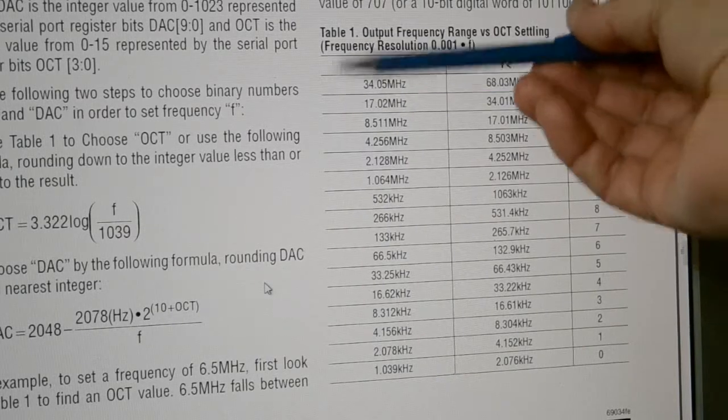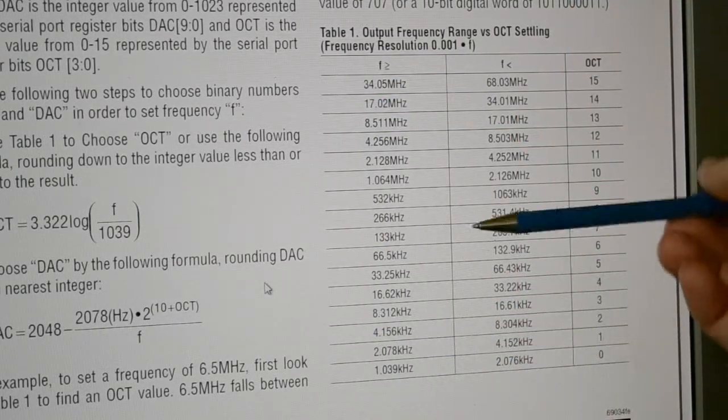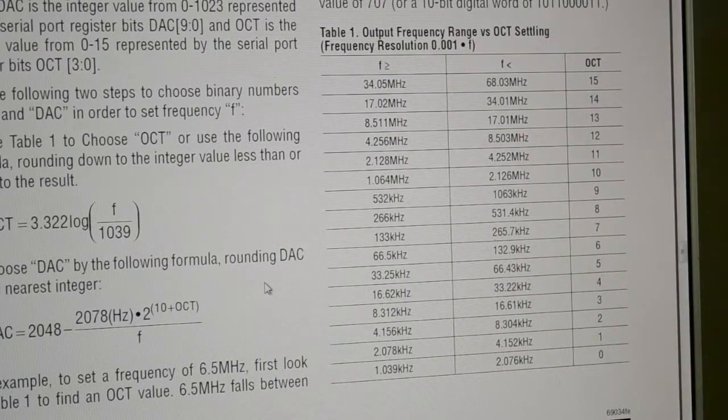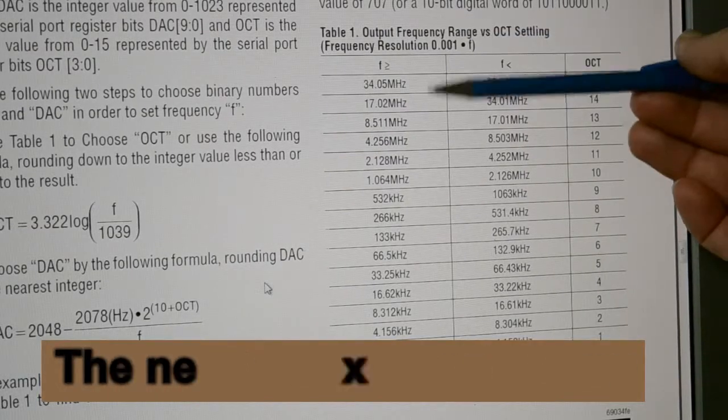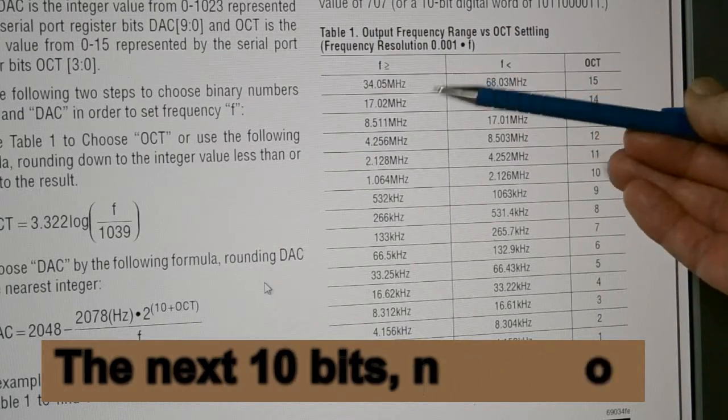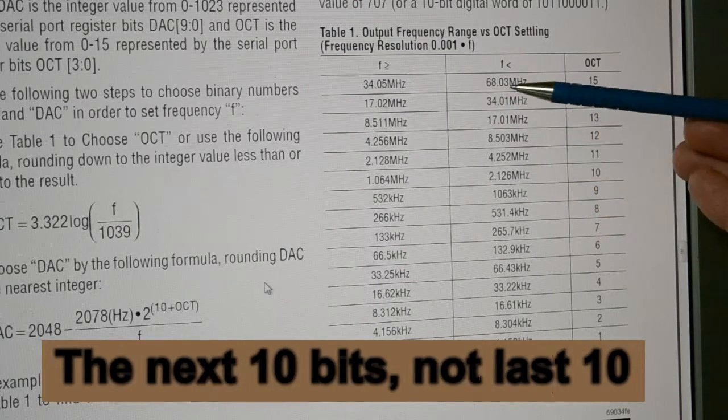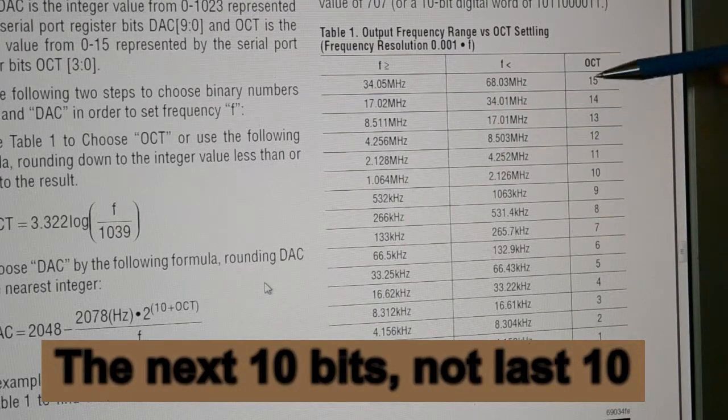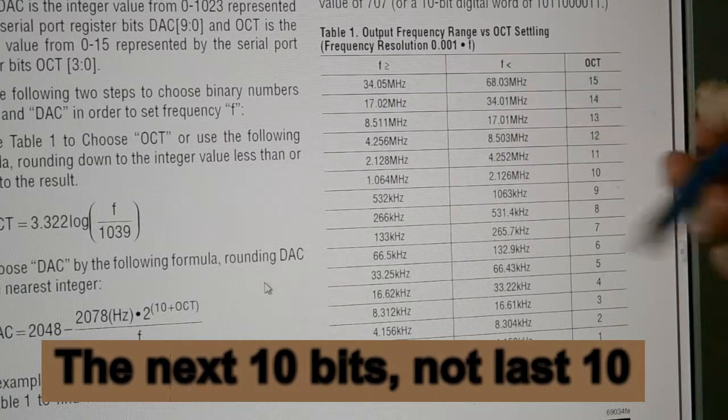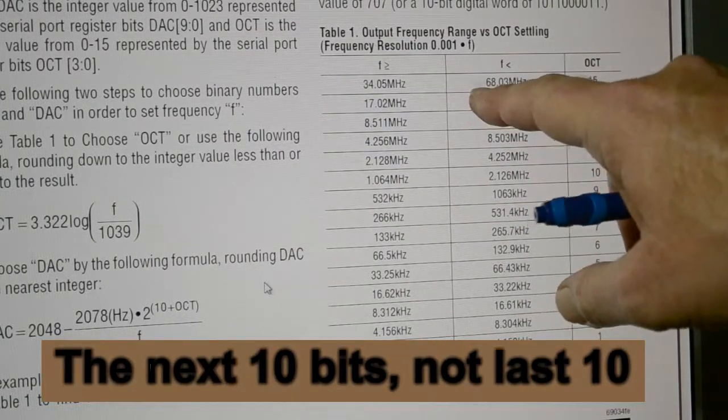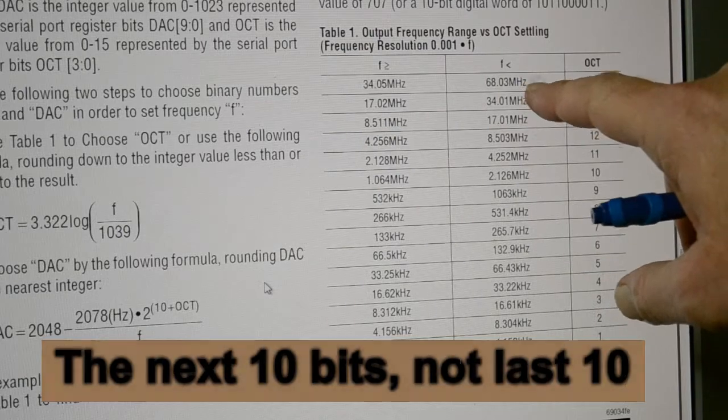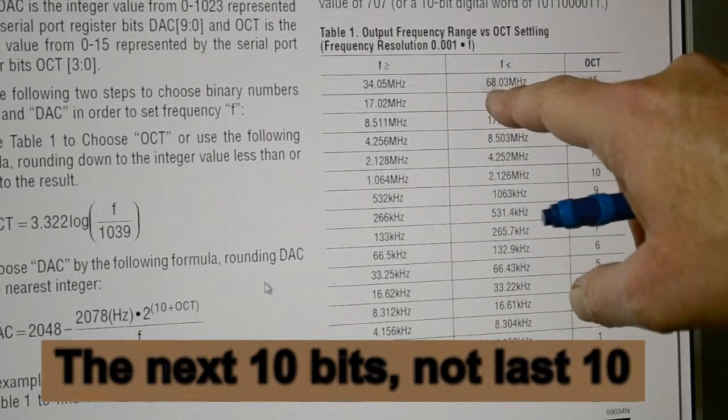If you initially set these octaves to get the band of frequencies you want, then using the last 10 bits of the SPI, you can step the frequency up from, for example, 34 to 68. Octave 15 will give you 34 MHz. Setting the last 10 bits to all 1s will jump it up to 68 MHz.